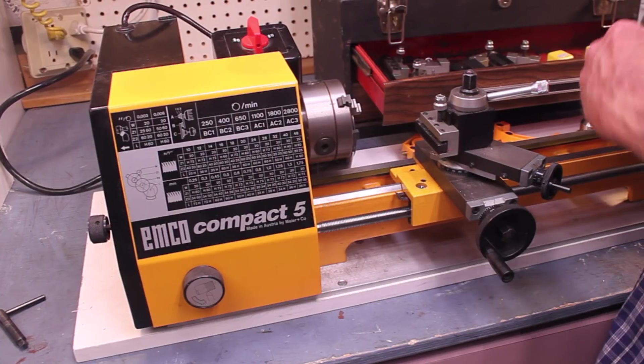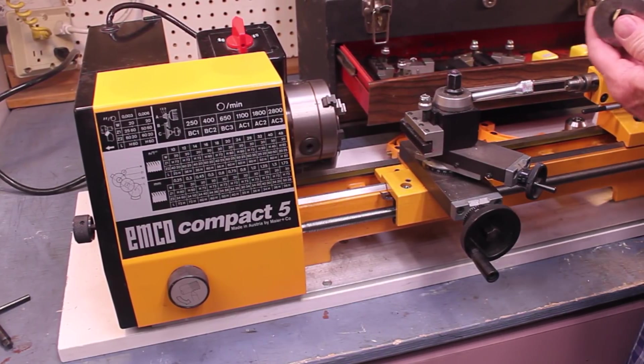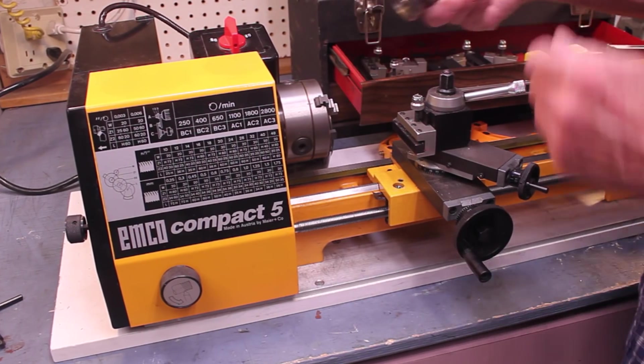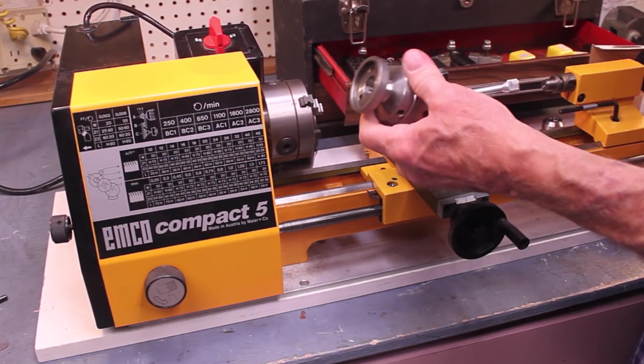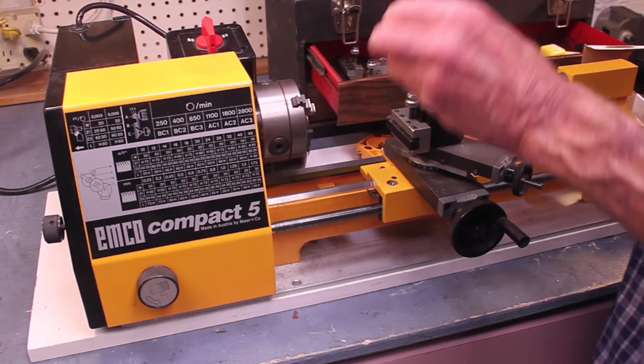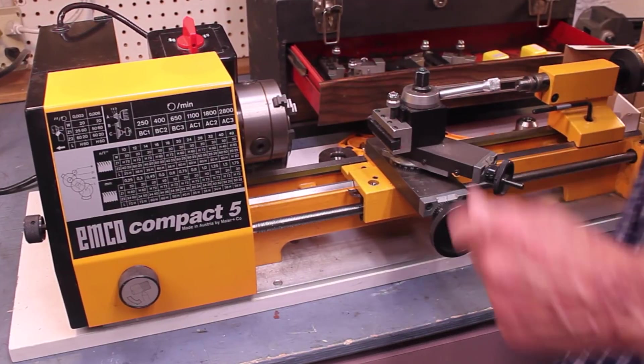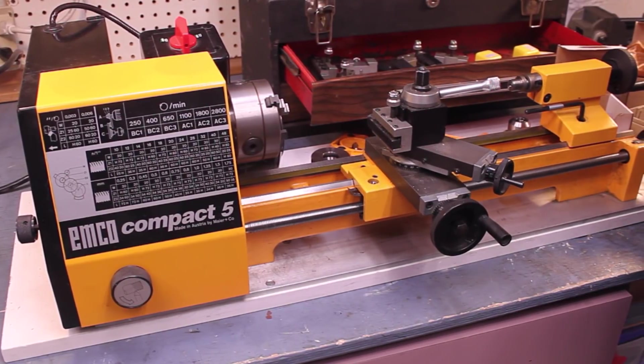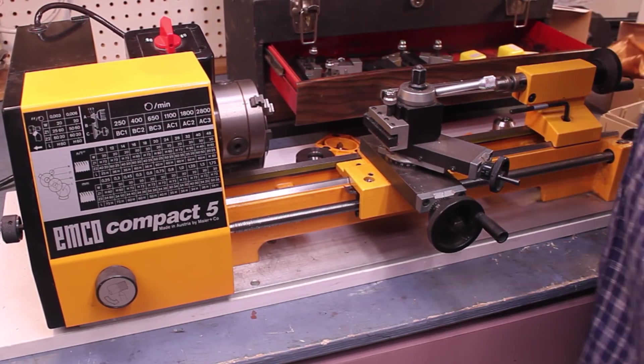Here's something kind of interesting. This is a collet chuck. This mounts right on here. Maybe I'll show you what that looks like mounted on there. And then this will hold ER25 collets, standard ER25 collets, which is nice if you want to be able to turn small diameter things. That's a very good option for that.